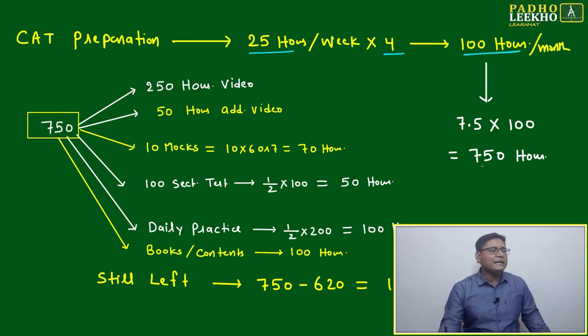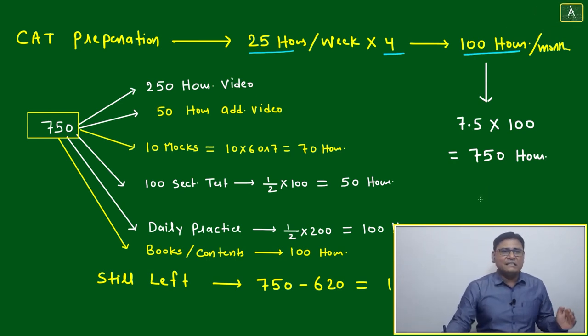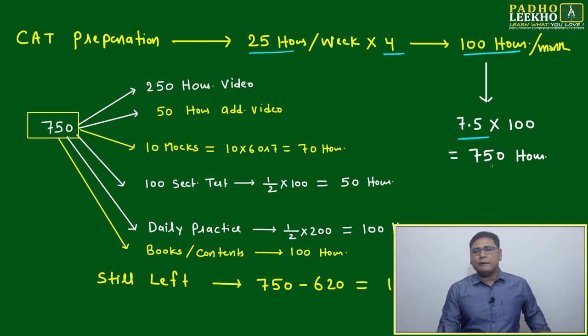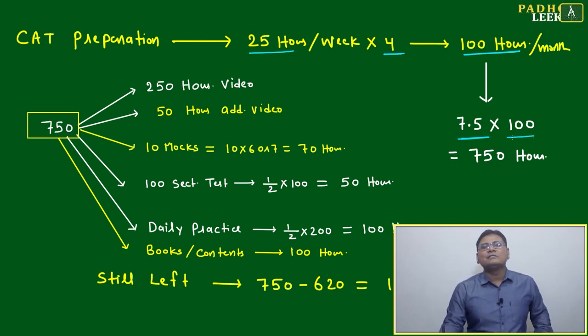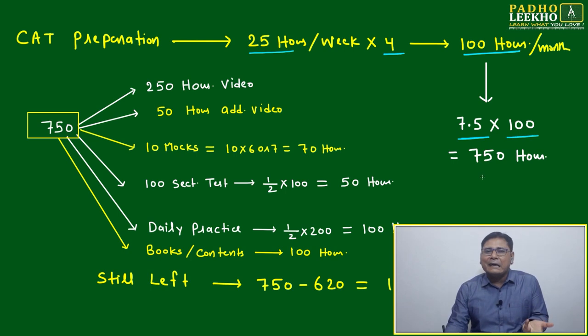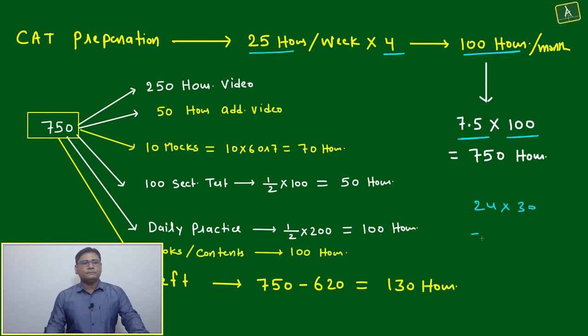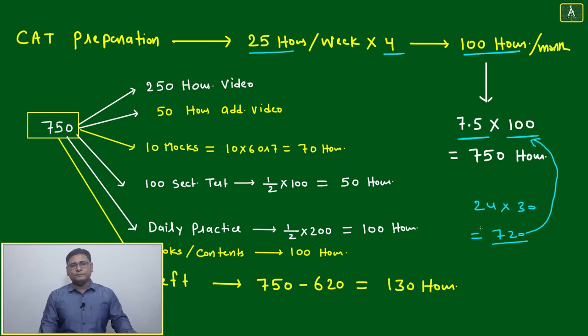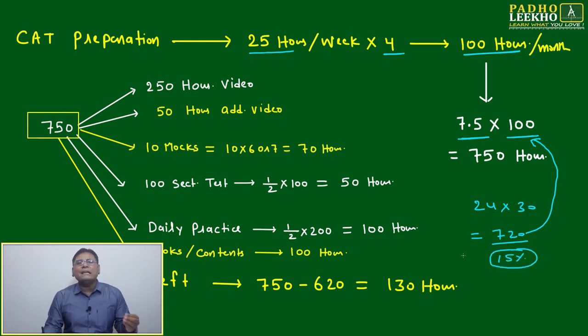How to divide time: CAT preparation needs 25 hours per week. In every month, generally four weeks, little bit more. 100 hours per month only required. If you're taking the decision now, you have almost 7.5 months - seven and a half months. 100 hours per month. How many hours every month? 24 times 30 equals 720 hours. In 720 hours I'm asking only 100 hours.